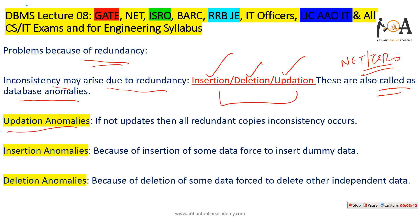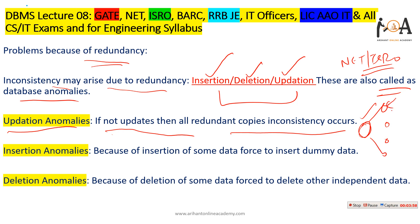What is the updation anomaly? Suppose you want to update data, but the same data exists at four different places. You have to update all four copies — until you update all of them, inconsistency will occur. That is why we should place data at one place only; if you want to update it, it gets updated in one operation. This kind of anomaly is called an updation anomaly.